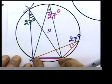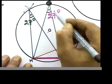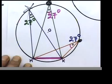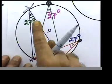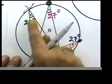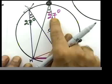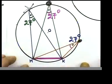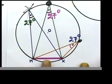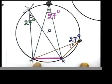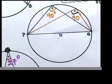This angle is made by this chord, this angle also is made by the same chord, and that angle also made by the same chord. So can we say that angles made by the same chord are equal? Angles made by the same chord are equal in the same segment. That's the most important thing. Angles in the same segment are equal, made by the same chord.